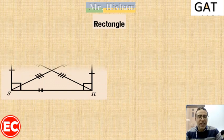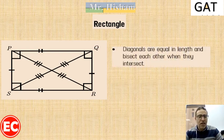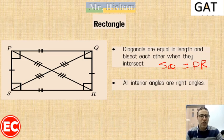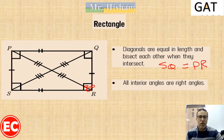The third quadrilateral is the rectangle. The rectangle takes all the properties of the parallelogram: each pair of opposite sides are equal and parallel, opposite angles are equal, and diagonals bisect each other. But we add two properties. First, the diagonals are equal in length: SQ equals PR. Second, each interior angle measures 90 degrees. So the two added properties for the rectangle are: diagonals are equal, and each angle equals 90 degrees.